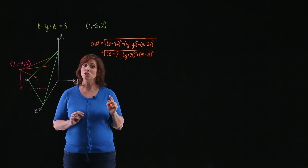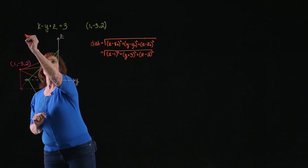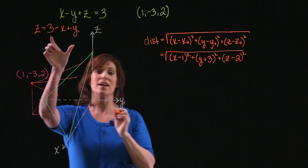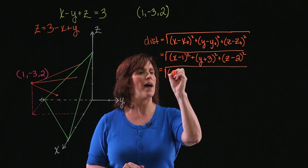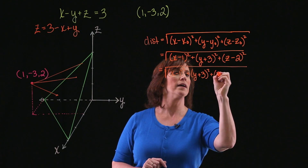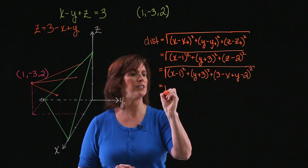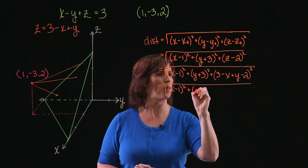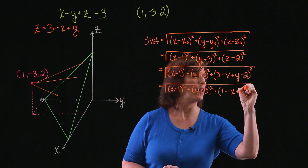I would like to write this as a function of just two variables. So I'm going to use the fact that I have my plane x minus y plus z equals 3, and solve that for z. So z is going to equal 3 minus x plus y. Substituting that in, I now have the square root of x minus 1 quantity squared, plus y plus 3 quantity squared, plus 1 minus x plus y quantity squared.